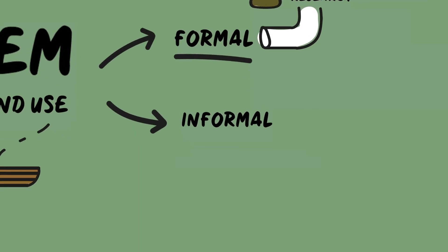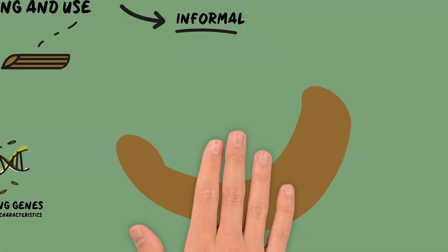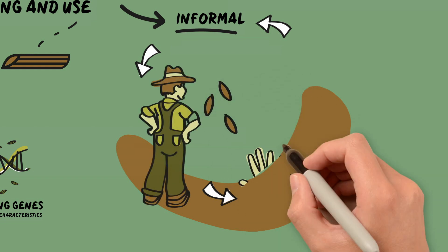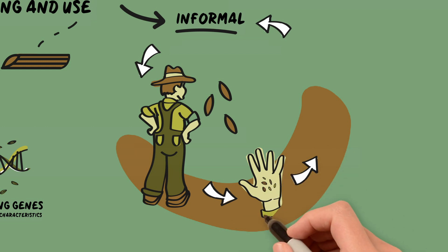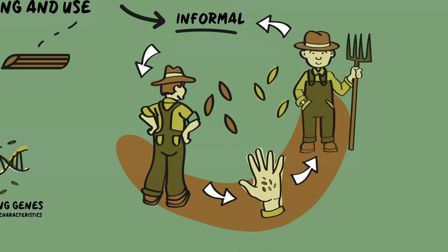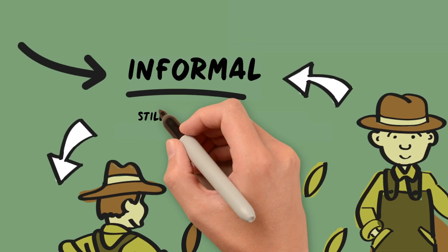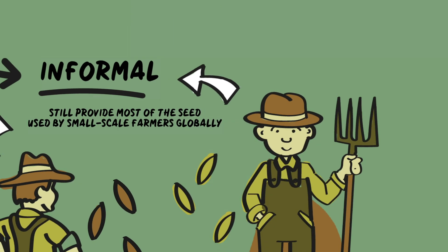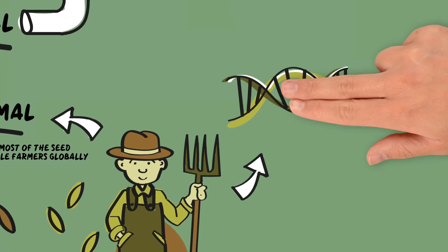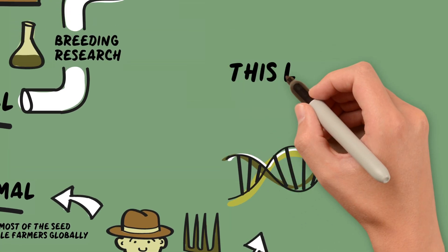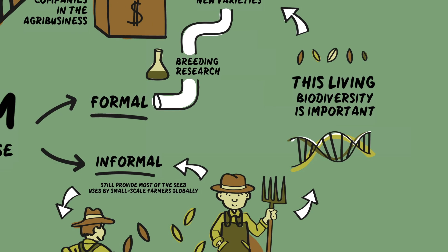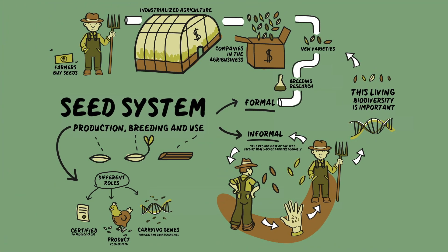In an informal system, on the other hand, there is a circular approach. Farmers carry out the selection in their fields to produce their own seed. Seed circulates within the farming community through exchange or trade. This is the typical system of small-scale farming, particularly in the Global South. Informal seed systems still provide most of the seed used by small-scale farmers globally and are key to conserving genetic resources on-farm. This living biodiversity is important for both the resilience of farmer seed systems and as a source of genetic variability for plant breeding in formal seed systems.